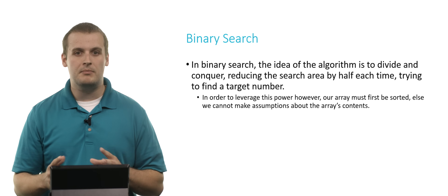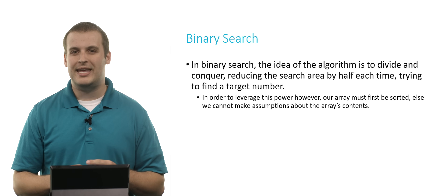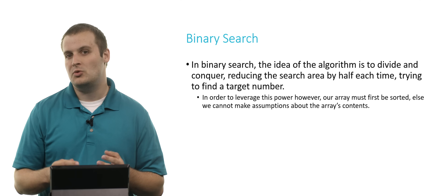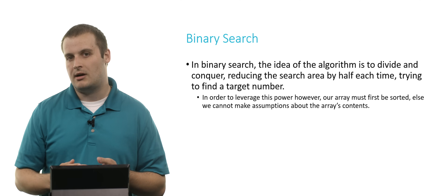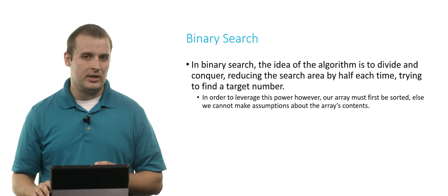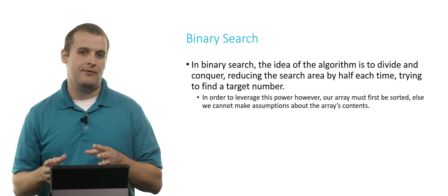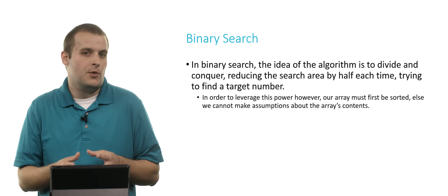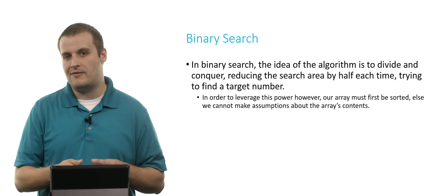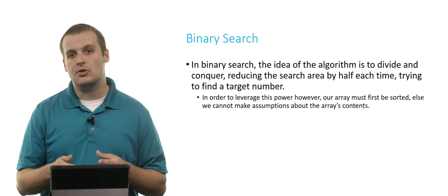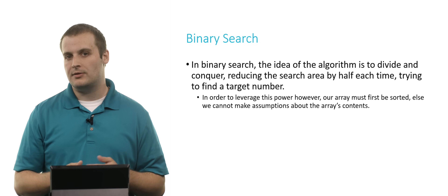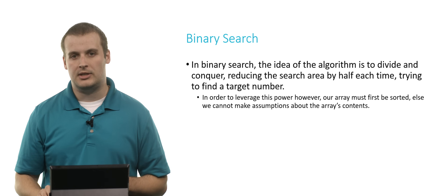If the array is a complete mix-up, we can't just out of hand discard half of the elements, because we don't know what we're discarding. But if the array is sorted, we can do that, because we know that everything to the left of where we currently are must be lower than the value we're currently at, and everything to the right must be greater.